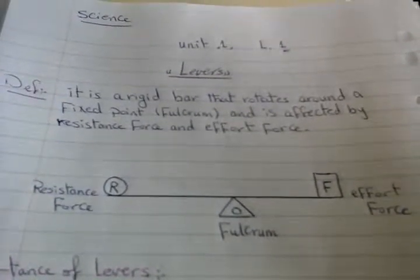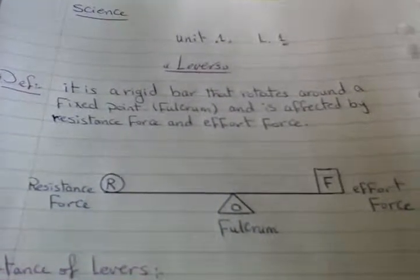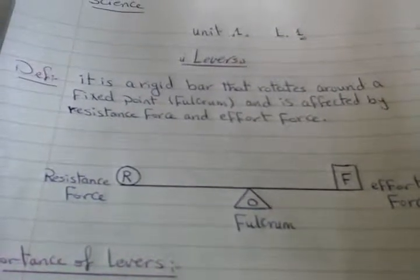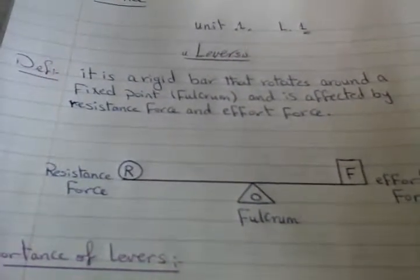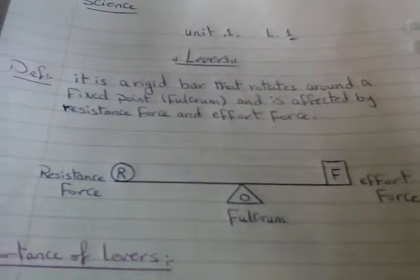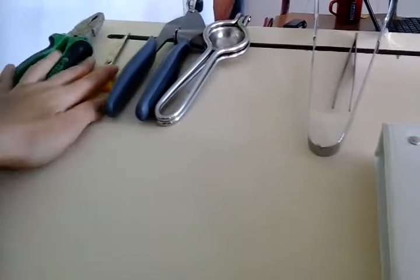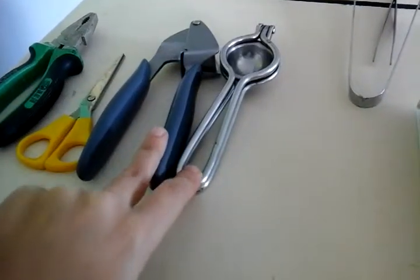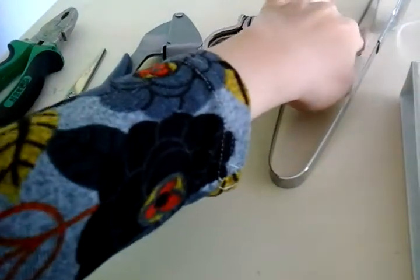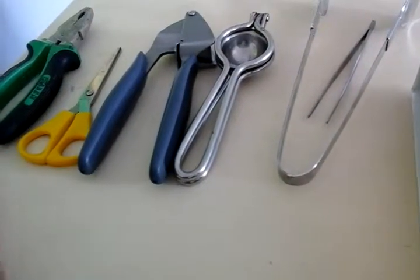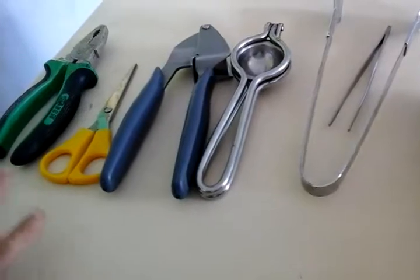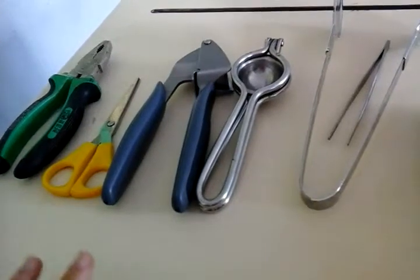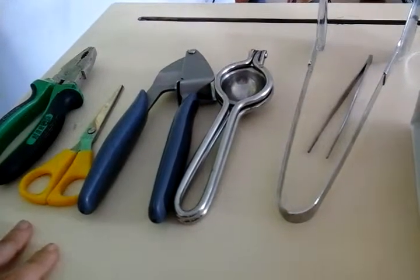What's meant by levers? We have levers around us. A lever is simply a very simple machine we use in our daily life but didn't know it was a lever. Like these shapes — we have pliers, scissors, maybe a nutcracker, a coal holder, and tweezers. They are very different tools but all share the common name: levers.